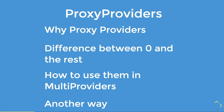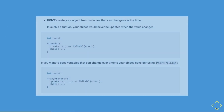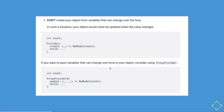Why should you use proxy providers? In the documentation, it clearly states that you should not create a simple provider if you are passing an object that changes over time. For example, you could see that there is bound to have some changes in a counter app. Providers itself do not get updated.